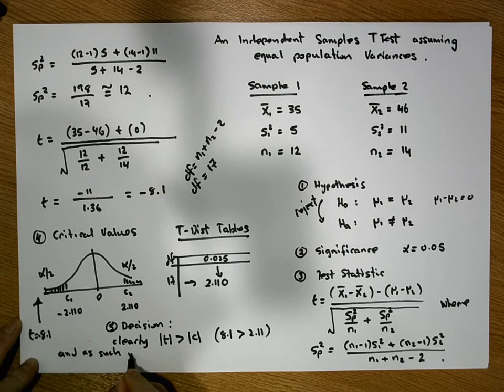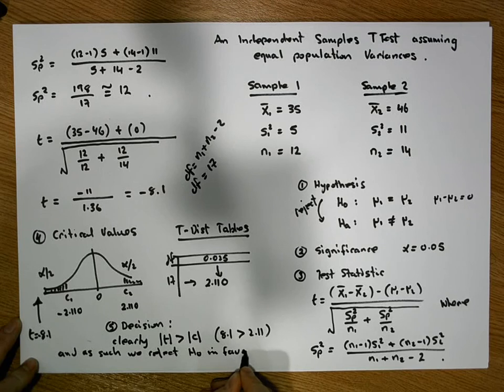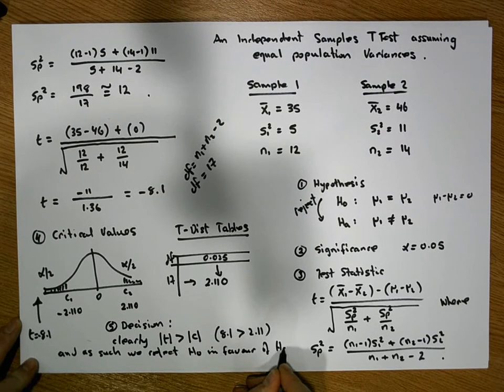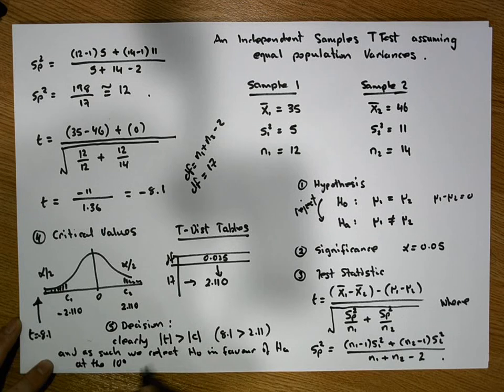We reject H0 in favor of HA at the 10%, sorry, in our case, it's at the 5% significance level, sig level, sig level.